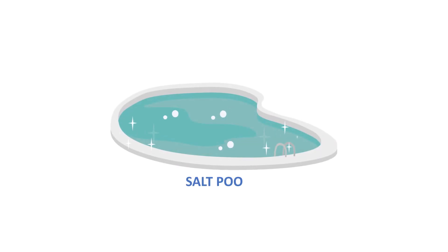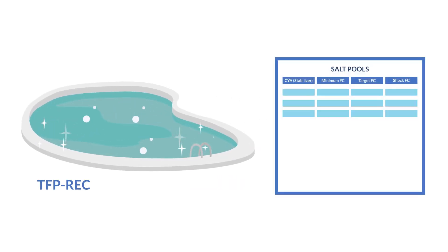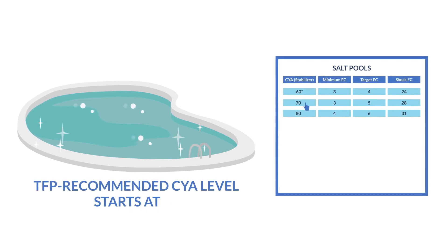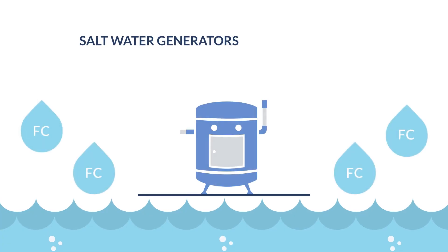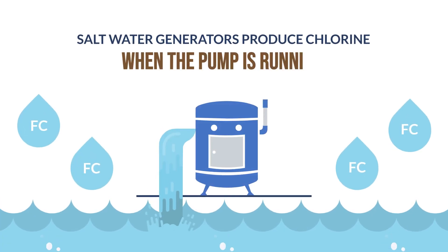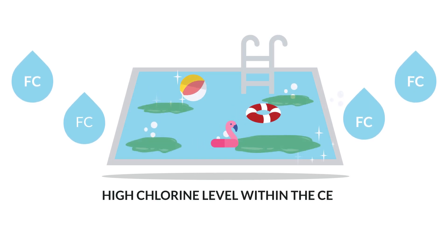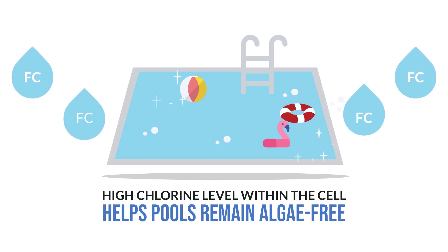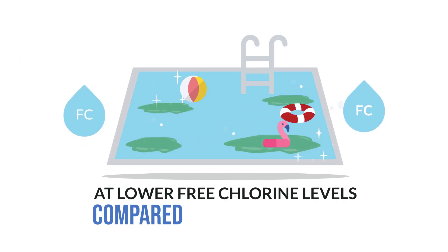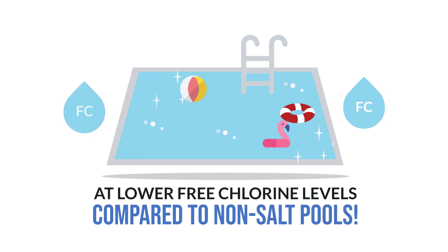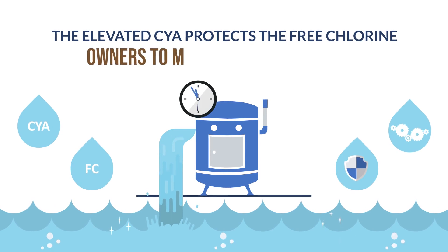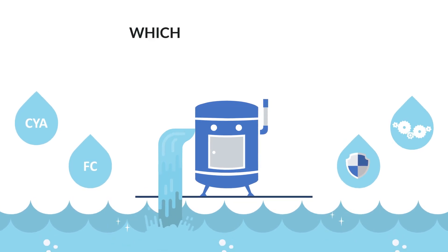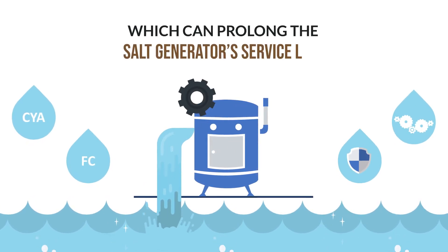If you have a salt pool, you may notice that the TFP-recommended CYA level starts at 70, but the free chlorine level is lower than a non-salt pool. Why? Salt water generators produce chlorine when the pump is running. This high chlorine level within the cell helps pools remain algae-free at lower free chlorine levels compared to non-salt pools. Also, the elevated CYA protects the free chlorine, which allows owners to minimize pump run times and can prolong the salt generator's service life.